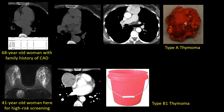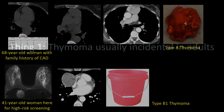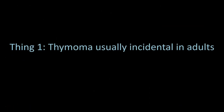Many thymomas encountered at our institution were picked up on exams done for entirely different reasons — preoperative radiographs before coronary artery bypass grafting, calcium scores, or high-risk breast cancer screening MRI. A calcium score showing zero calcium but an anterior mediastinal lesion turned out to be a surgically resected type A thymoma. A 41-year-old woman at high-risk breast cancer screening had a CT showing a mass with areas of high attenuation — a type B1 thymoma. The key lesson: thymomas are usually incidental in adults, and that number is likely underestimated.